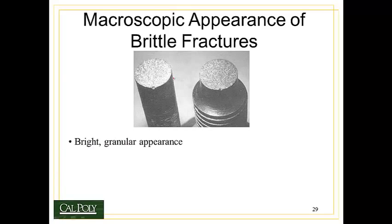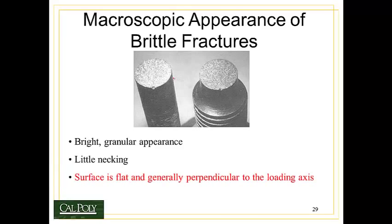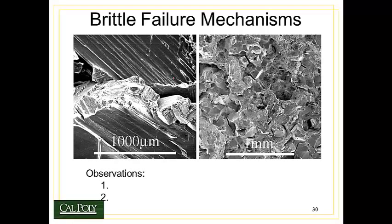Brittle fractures, on the other hand, tend to be very flat and exhibit very little necking. They're usually bright because they reflect light back at us, and the surface is flat and generally perpendicular to the loading axis, although sometimes at a 45-degree angle. There are two modes of brittle failure: transgranular cleavage, where the crack propagates across or through the grains along planes of atoms, and intergranular decohesion, where the crack travels along grain boundaries.